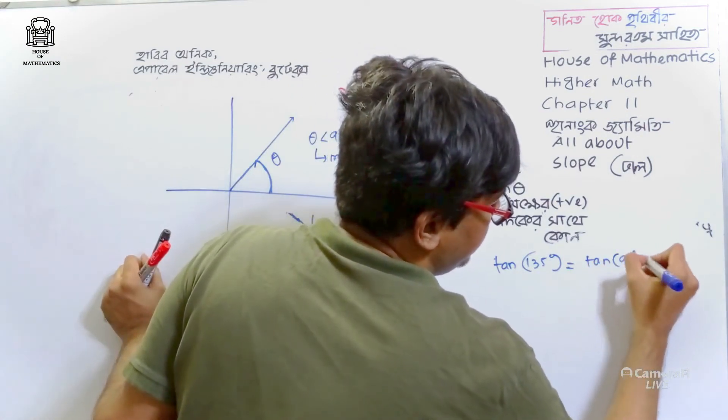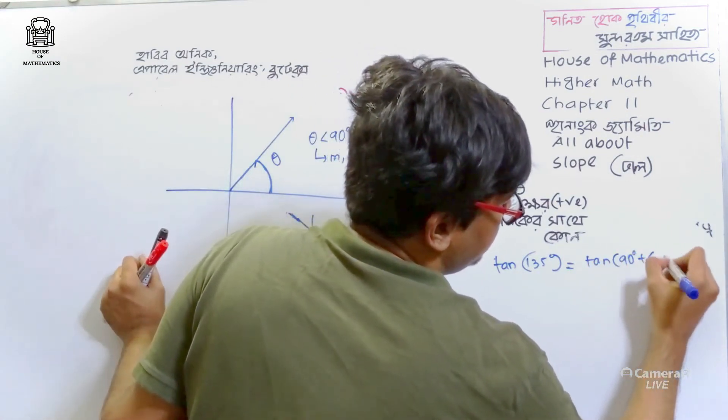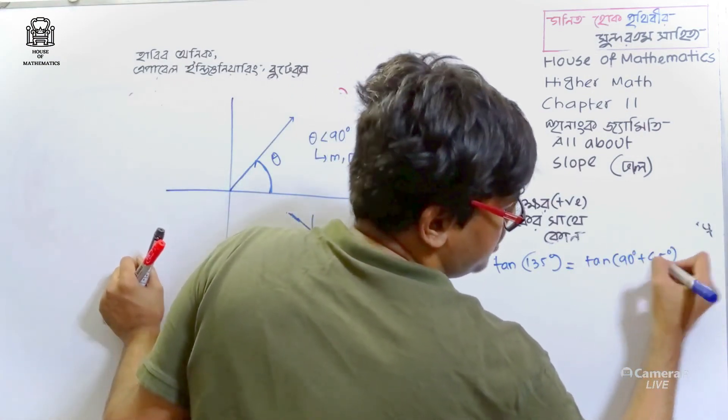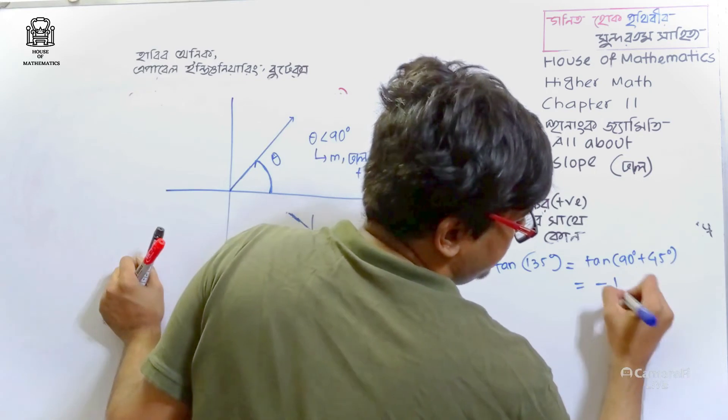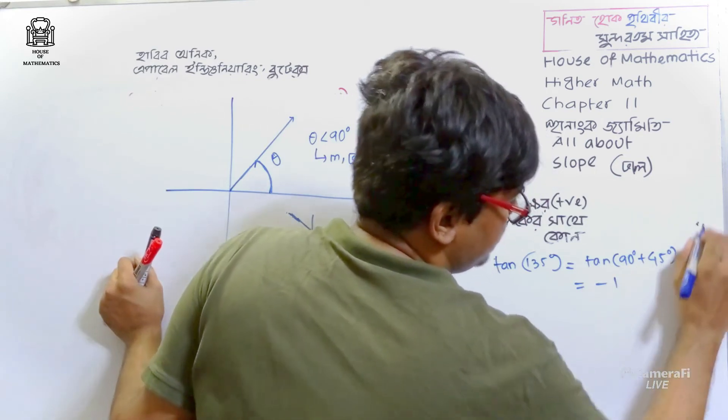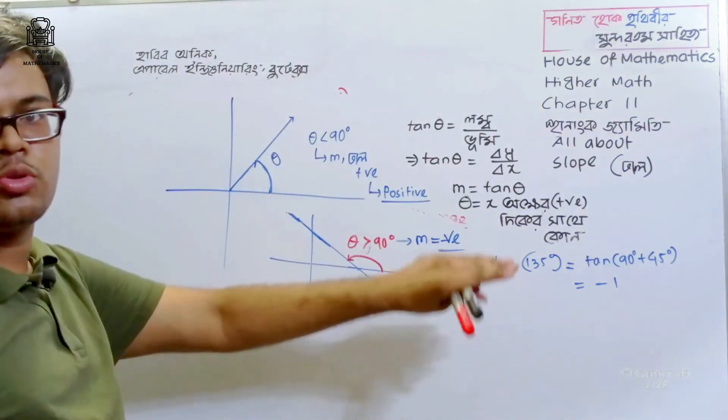tan of 135 degrees equals tan of (90 plus 45 degrees). The answer is minus 1.